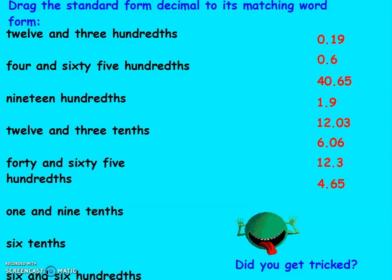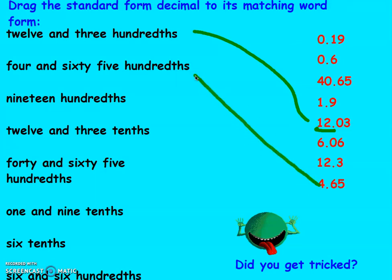Now you want to be able to match standard form to the matching word form — pause the video and see if you can match them all correctly, then I'll show you the answers. First: twelve and three hundredths — twelve is the whole, three hundredths. Four and sixty-five hundredths — four is the whole, sixty-five is the decimal. Nineteen hundredths — no whole, zero and nineteen hundredths. Twelve and three tenths — practice saying them: this is the tenths place, so twelve and three tenths, not twelve and three hundredths.